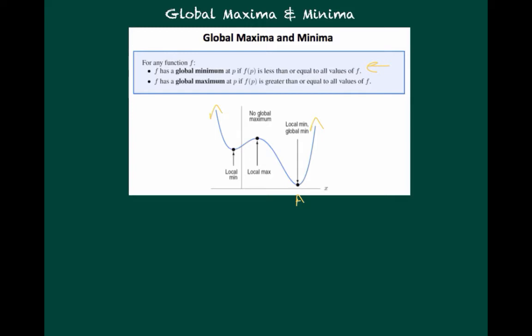So as you can see from the definition, the global min is less than or equal to all values of f. Now, point B is a local maximum, but since the function continues to increase as x goes to positive and negative infinity, it is not a global maximum because the function gets bigger. So as you can see from the definition of global max, since there are other y values greater than or equal to the value at B, then it's not a global maximum. And point C here is just a local min. Since it's not as low as point A, it can't be a global minimum.